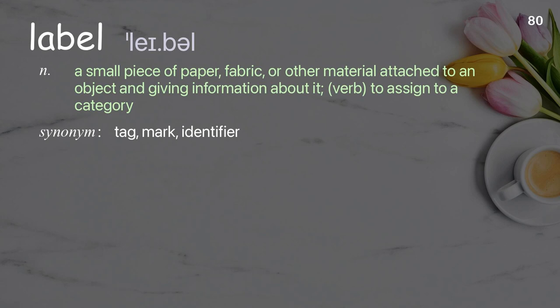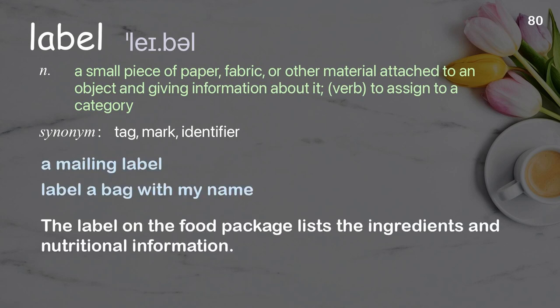Label: a small piece of paper, fabric, or other material attached to an object and giving information about it; verb: to assign to a category. Examples: a mailing label; label a bag with my name. The label on the food package lists the ingredients and nutritional information.